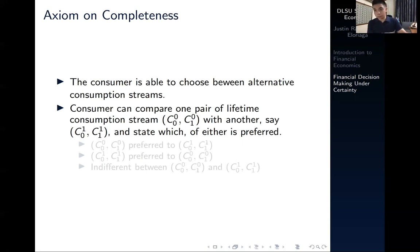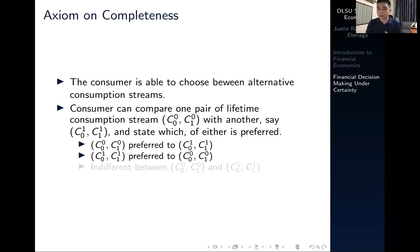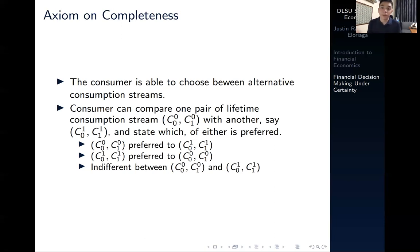A consumer can compare one pair of a lifetime consumption stream — a pair containing consumption today and consumption tomorrow — versus another pair also containing consumption today and consumption tomorrow. The consumer can say which of these two streams is more preferred. Either the first stream is preferred to the second, the second stream is preferred to the first, or the consumer could be indifferent between the two streams, meaning they have no preference and are fine with either.